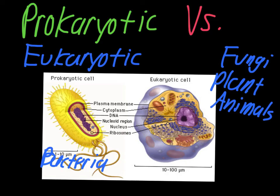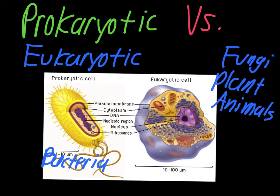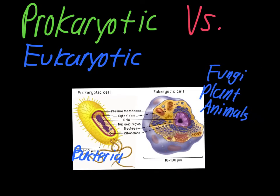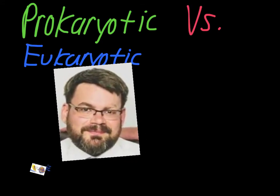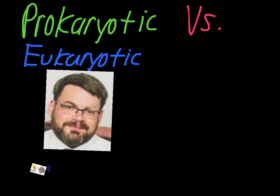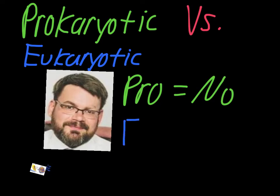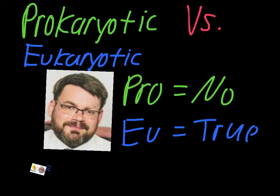One simple way of remembering the difference between these is the idea that 'pro' in prokaryotic means no — so no nucleus. And 'eu' in eukaryotic means true. So we've got pro means no, there's no nucleus, and eu means true — this is an example of a cell that has a true nucleus. This is a simple trick that will help you remember the difference between prokaryotic and eukaryotic cells.